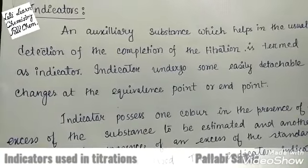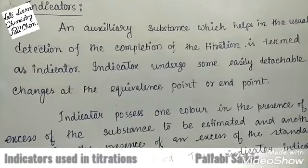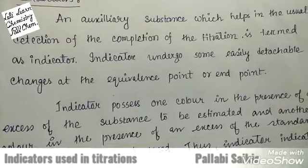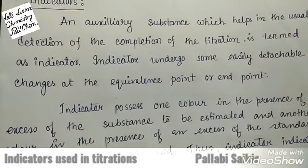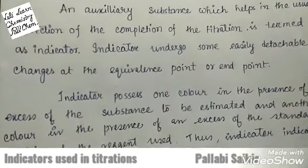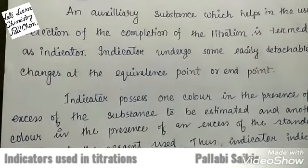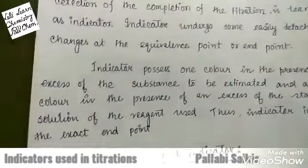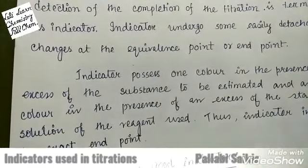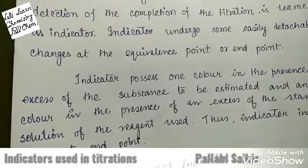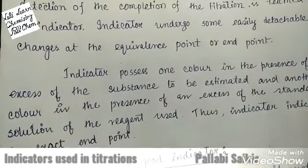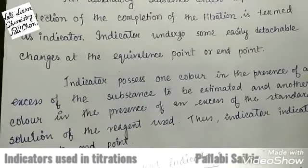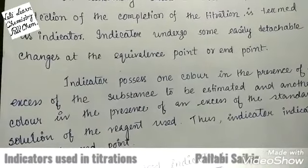How does it show the detectable changes? The indicator possesses one color in the presence of excess of any substance and it will show another color in the presence of excess of another substance. Hence during a titration reaction, when a titrant is added and it is exceeding, the indicator will show a different color, and hence the indicator will do the work like that.